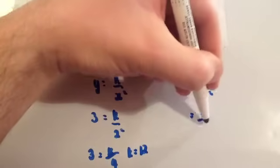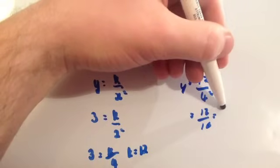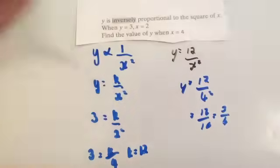So, you get Y equals 12 divided by 4 squared. 4 squared is 16. So, 12 divided by 16. And let's just cancel down this fraction. They're both in the 4 times tables. So, 3 over 4, so 3 quarters.